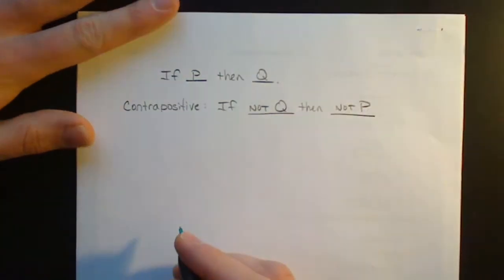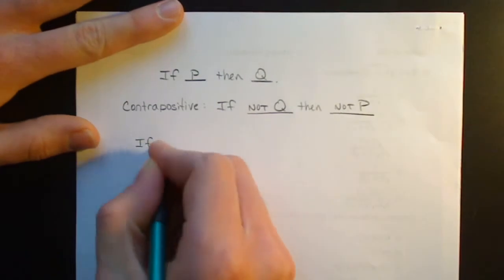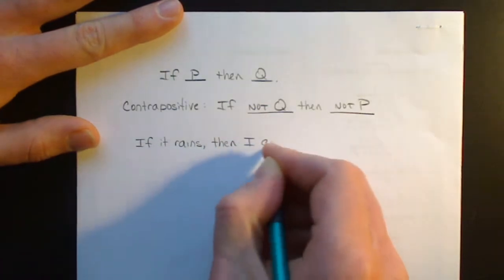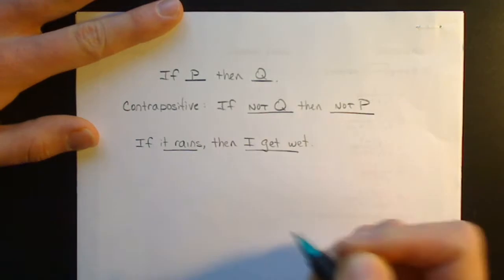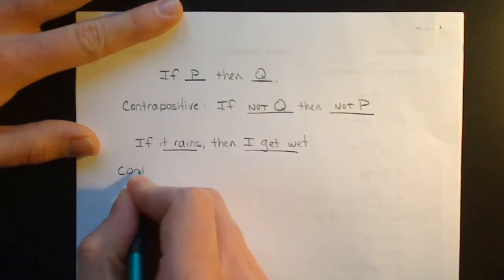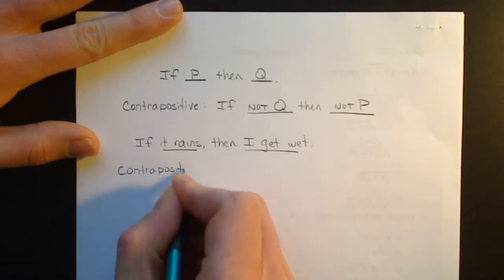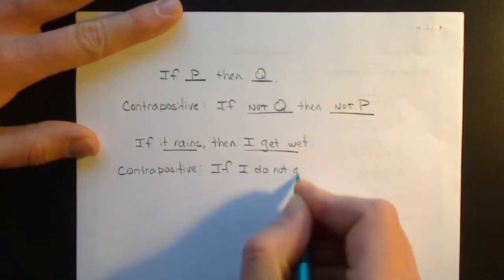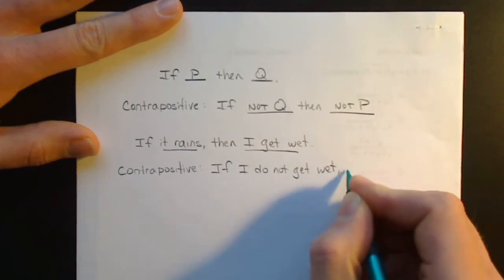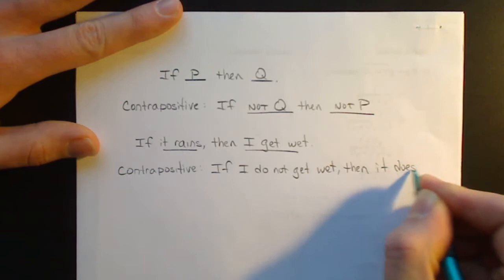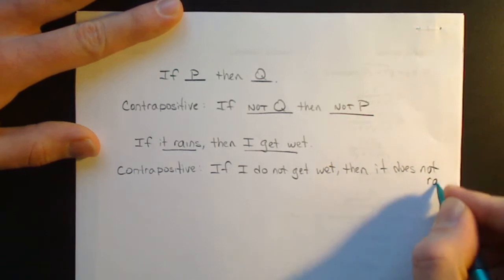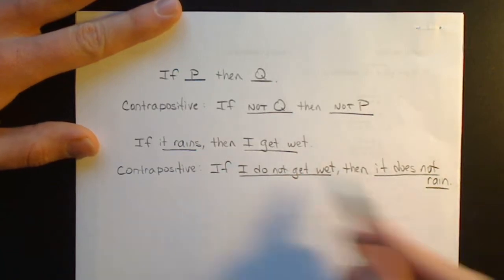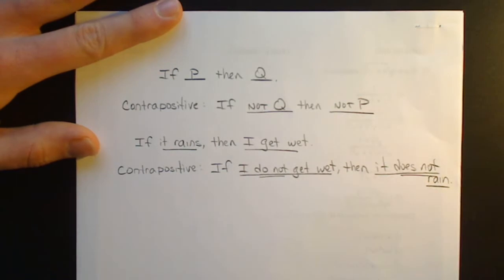Let's take a look at the same two examples from the pretest. If it rains, then I get wet. The contrapositive would be: if I do not get wet, then it does not rain. If you switch the 'get wet' and the 'rain', we also added the extra 'does not'.